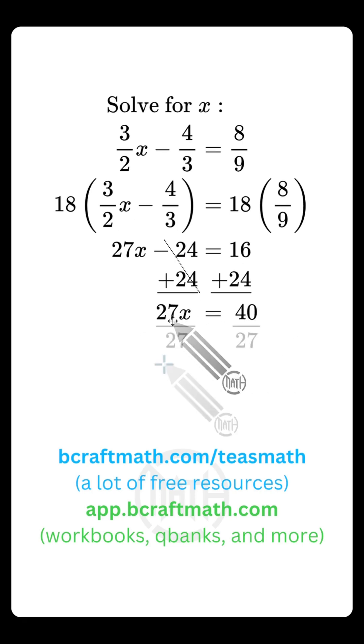We got one more step. We need to get x by itself. Let's divide both sides by 27. 27's cancel over here. What do we have left? x equals 40 over 27.